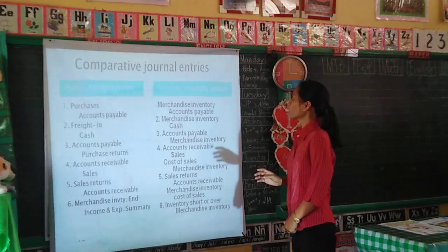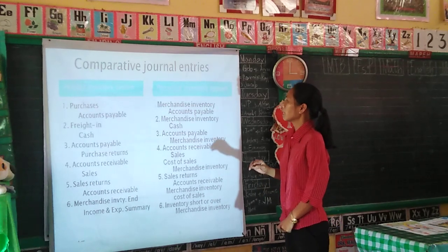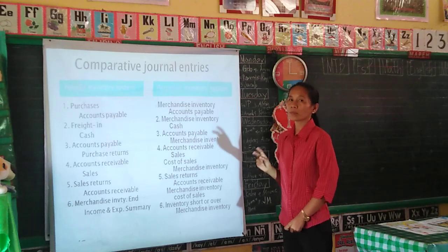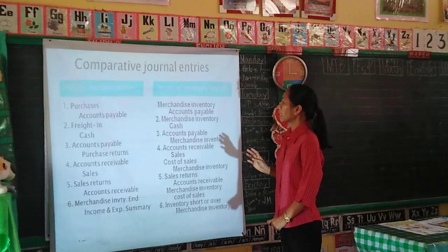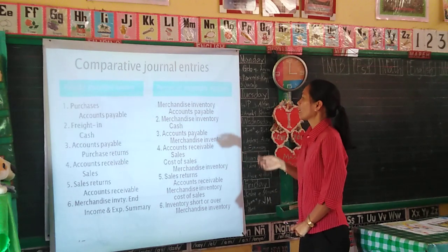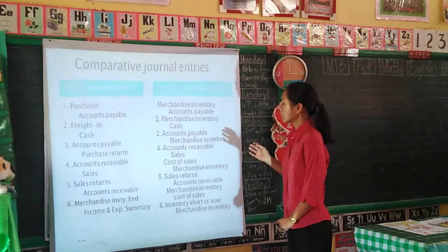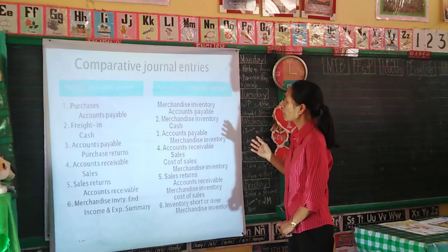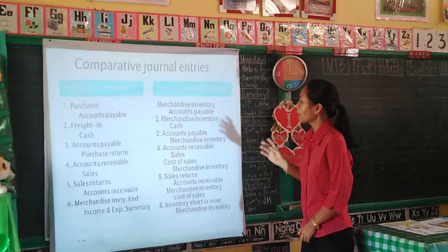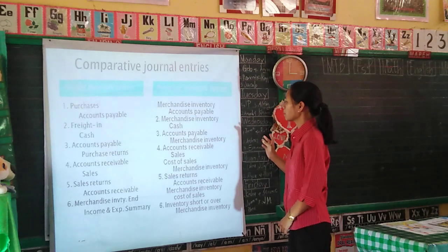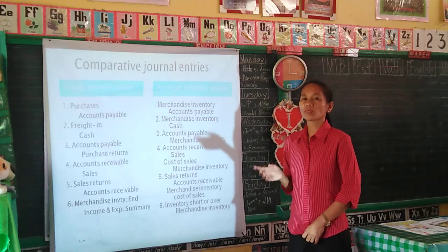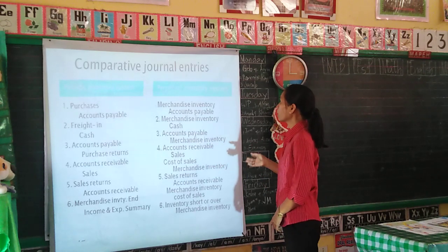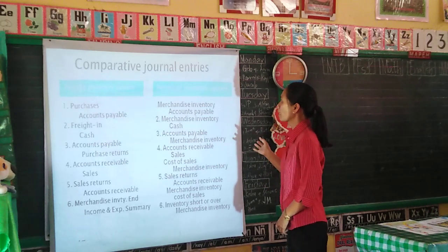Next are comparative journal entries. There are two inventory systems: the periodic inventory system and the perpetual inventory system. The difference is that the periodic system has fewer journal entries compared to the perpetual. The periodic system has account titles such as purchases, purchase returns and allowances, purchase discounts, and freight-in, which are not present in the perpetual. The perpetual system uses cost of sales, which is not in the periodic.